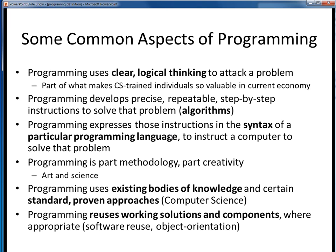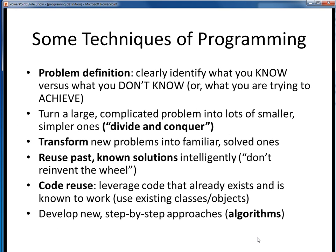Programming is about taking those instructions, or that algorithm, and being able to express it in the available syntax of some programming language, so that a computer can be instructed to solve that problem. Programming is actually part formal methodology and part creativity — some art and some science. Programming draws upon existing bodies of knowledge and lots of standard proven techniques to solve these problems. We might consider computer science as the formal embodiment of that knowledge. And finally, programming seeks to reuse, as much as possible, existing solutions and software components, rather than starting from scratch and reinventing the wheel every time. This touches upon CS concepts such as software reuse, or object orientation, or making use of what already exists to solve new problems.